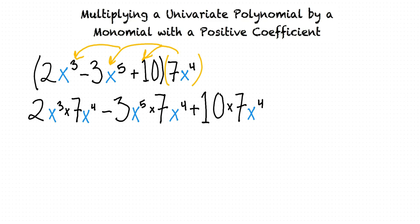Next, we simplify each term, which gives us 14x to the seventh minus 21x to the ninth plus 70x to the fourth. Since the variables in each term have different exponents, we cannot combine like terms, so this is our final answer.